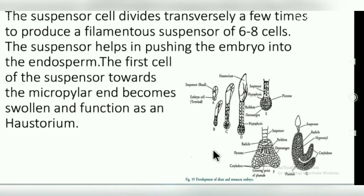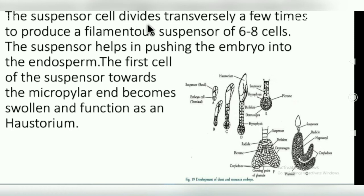The suspensor cell divides transversely a few times to produce a filamentous suspensor of six to eight cells. When the suspensor cell divides transversely, it becomes a filamentous suspensor, which is associated with the endosperm.